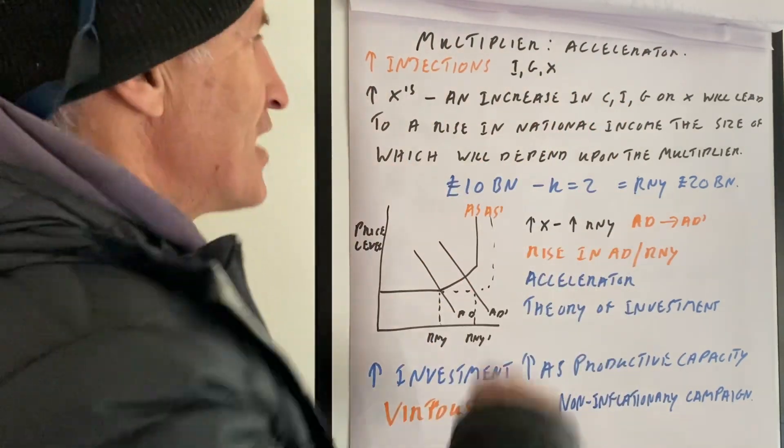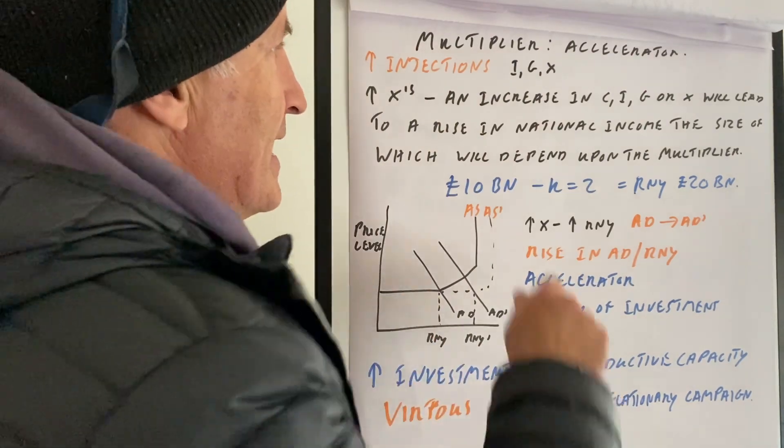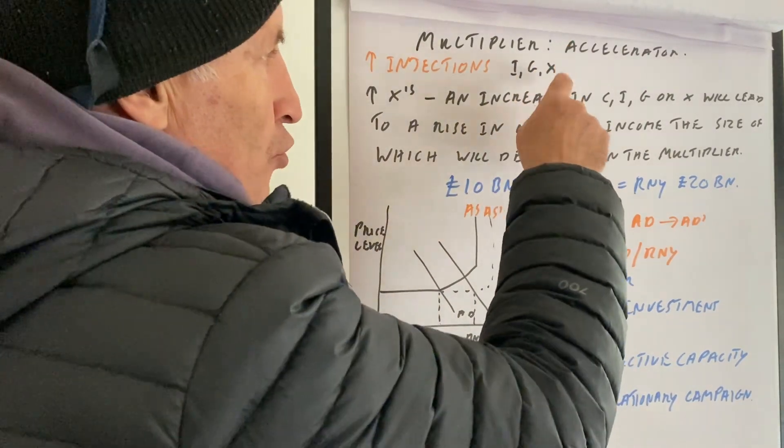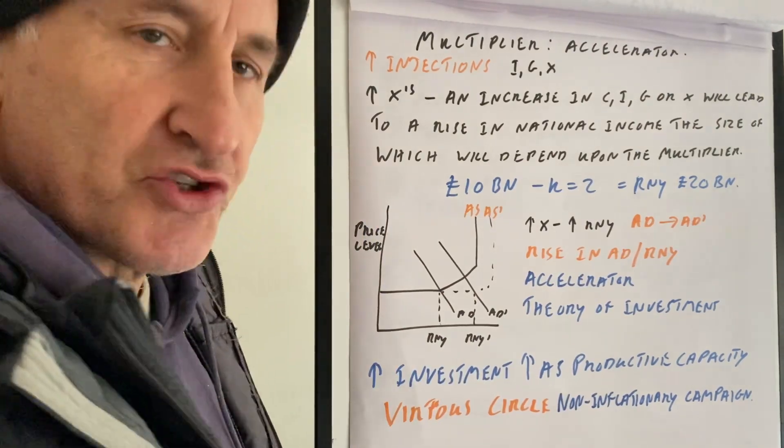Then we have this question: increasing the injections. An injection is I, G, or X. A withdrawal is savings, imports, and taxation. Okay, so imagine if there's an increase in exports. So we need to know what the multiplier equation is.